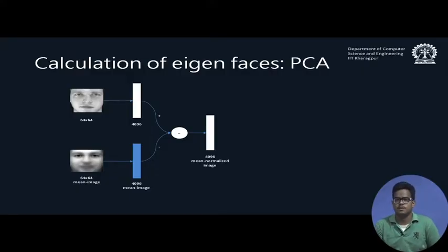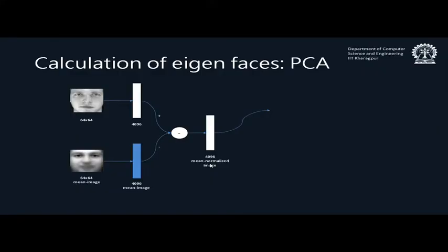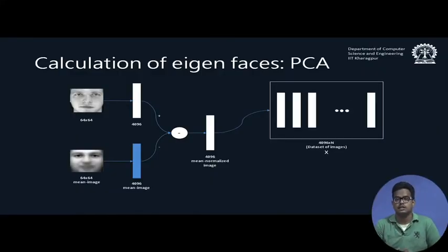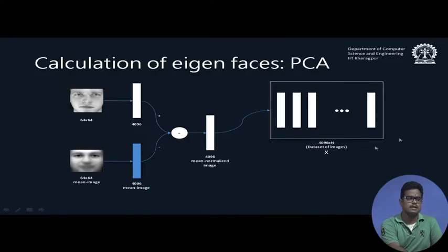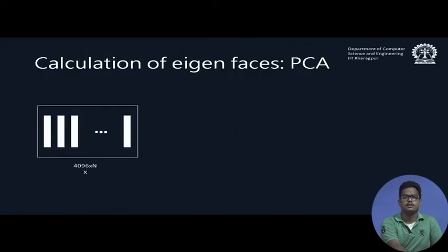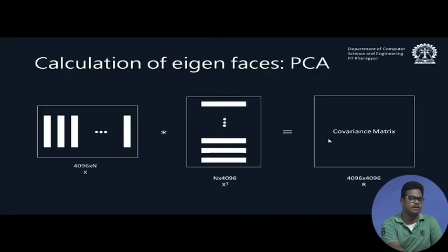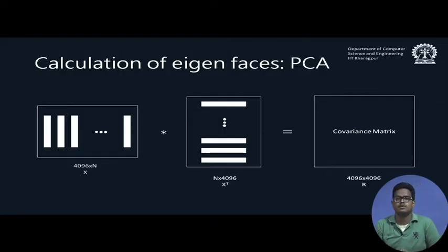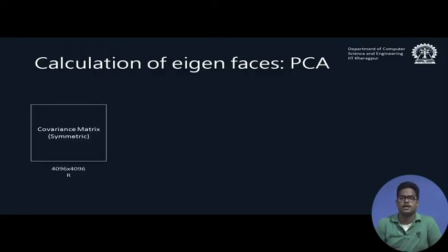We do this for all training images, producing 4096-dimensional mean-normalized vectors. We create a matrix X where each column is one training image. If we have N training images, X has size 4096×N. Next we compute the covariance matrix R = X·Xᵀ, which has size 4096×4096. The principal components are the eigenvectors of R, which we compute using singular value decomposition, representing R as P·D·Pᵀ — P contains eigenvectors as columns, and D is a diagonal matrix of eigenvalues.